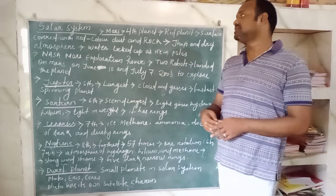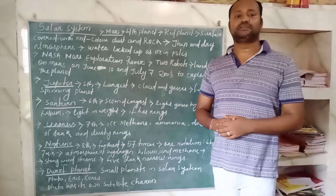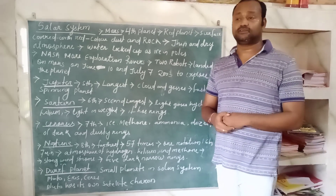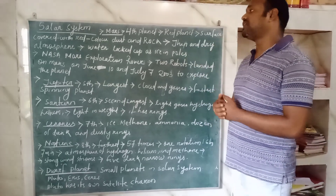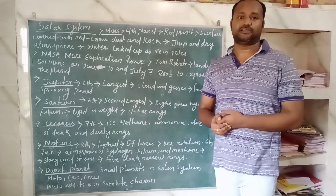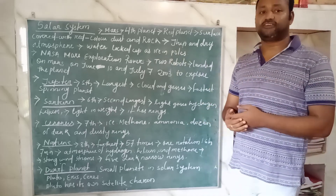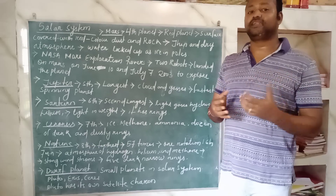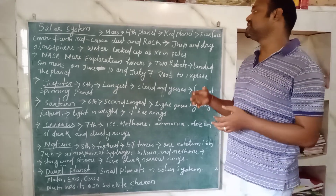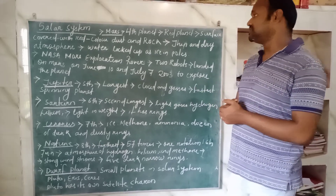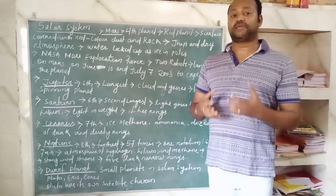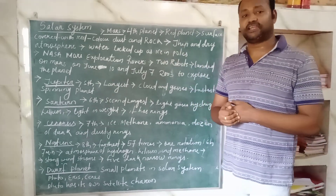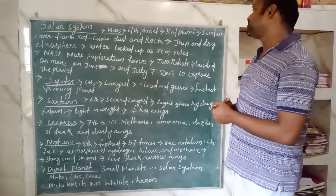Mars is the fourth planet in the solar system. It is also known as the red planet, because its surface is full of red colored soil and it has red colored rocks. The dust which is present within it is also red. That's why it appears red in color.